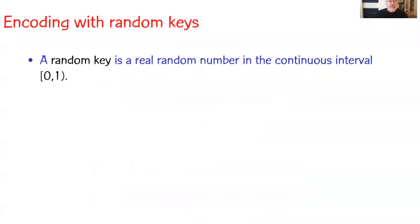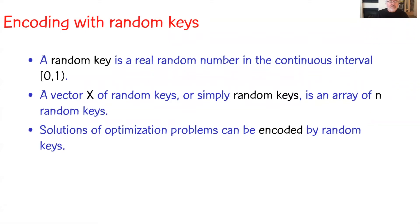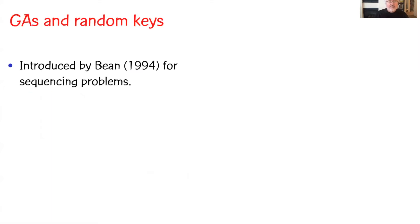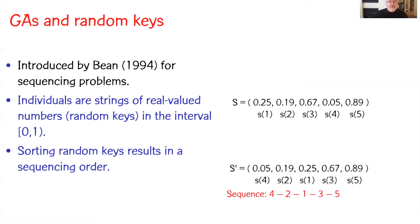So let's talk about encoding with random keys. A random key is a real random number in the continuous interval 0, 1. A vector x of random keys is an array of n random keys. Solutions of optimization problems can be encoded by random keys. A decoder is a deterministic algorithm that takes a vector of random keys as input and outputs a feasible solution of the optimization problem. Random keys and genetic algorithms were introduced by Bean in 1994 for sequencing problems. Individuals are strings of real-valued numbers, or random keys, in the interval 0, 1. Sorting random keys results in a sequencing order.